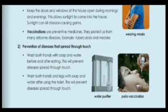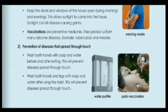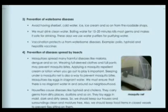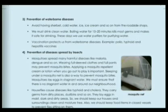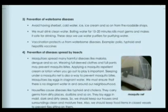Second, prevention of diseases that spread through touch: wash both hands with soap and water before and after eating, and wash hands and legs with soap and water after using the toilet. For prevention of waterborne diseases: avoid having roadside sherbet, cold water, ice, and ice cream. We must drink clean water. Boiling water for 15–20 minutes kills most germs and makes it safe for drinking. We can also use water purifiers. Vaccinations protect us from waterborne diseases — for example, polio, typhoid, and hepatitis vaccines.